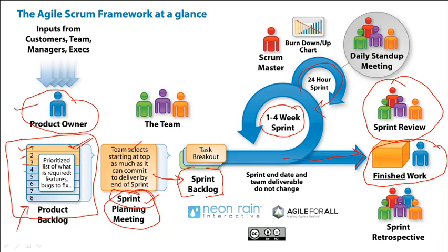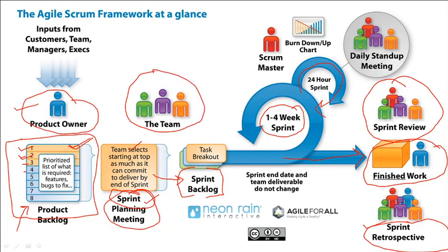After developing the first sprint or module, it will be showcased to the product owner — we will showcase our work against requirements. After that, we have a sprint retrospective meeting where we review problems from the first module and resolve them before the second module starts. After the sprint retrospective, the process starts again: we take the second user story, hold another sprint planning meeting, divide it into subtasks forming a new sprint backlog, and development starts again with the dev team.